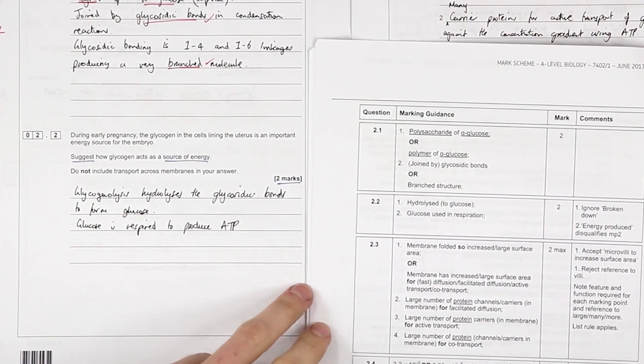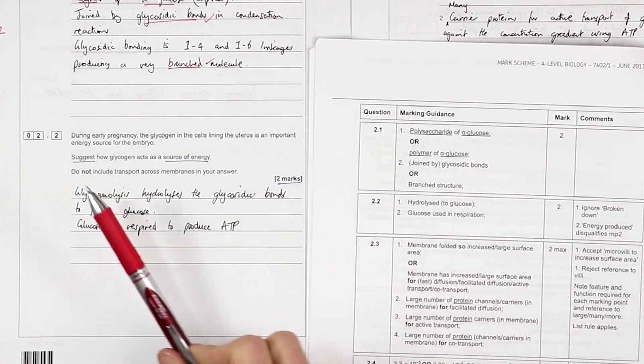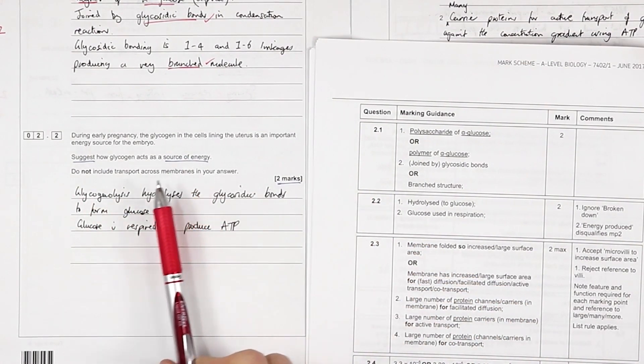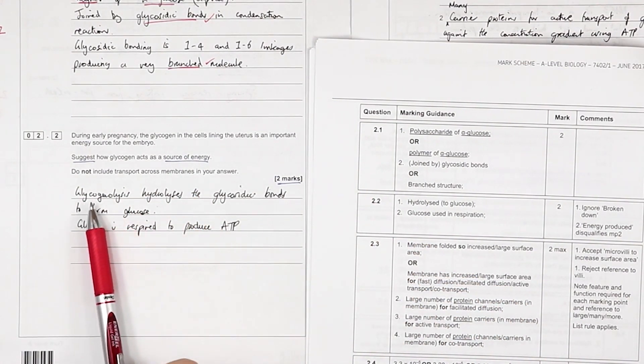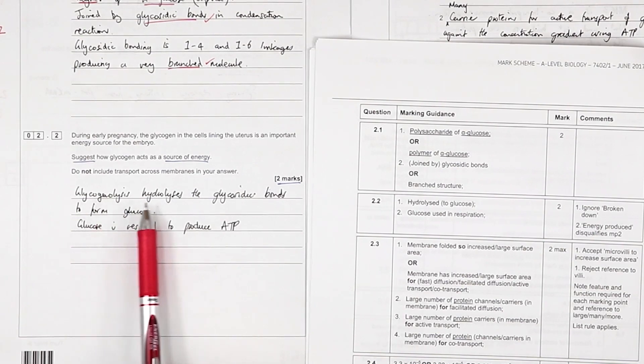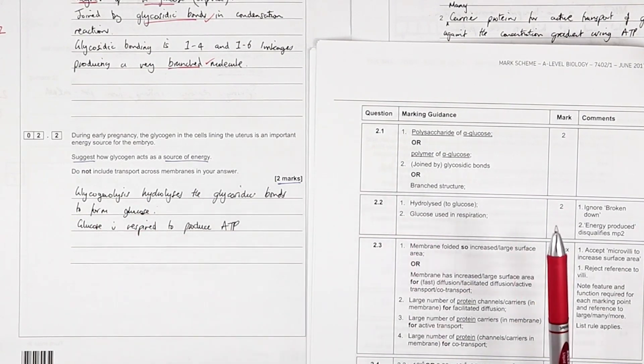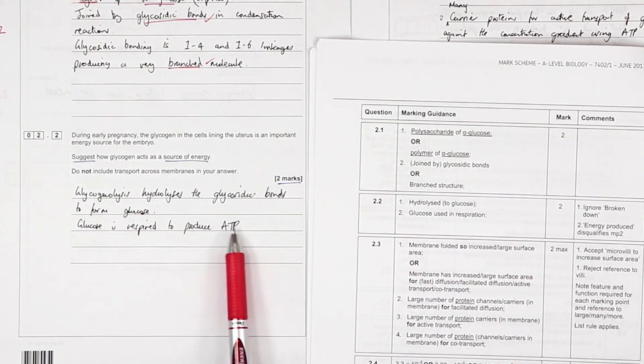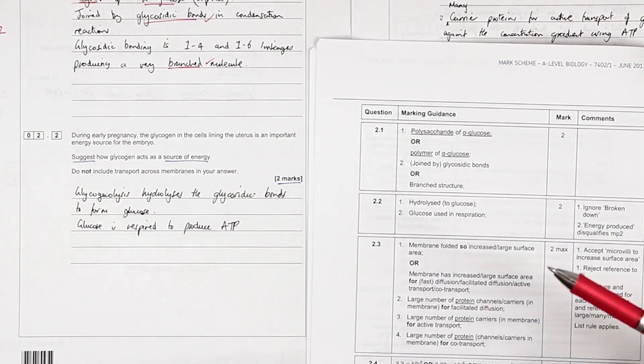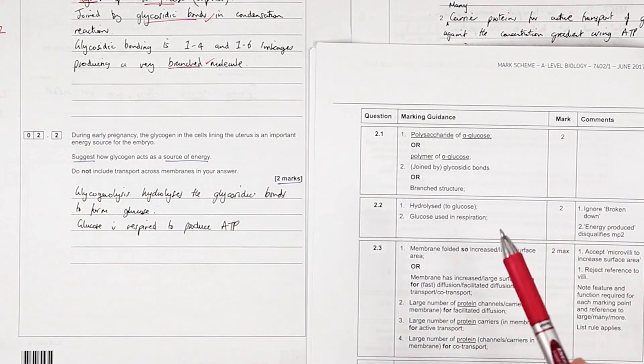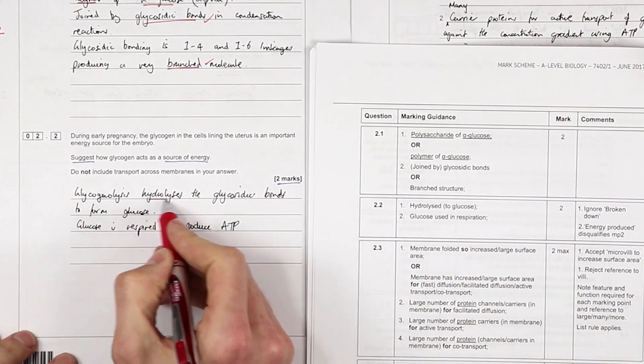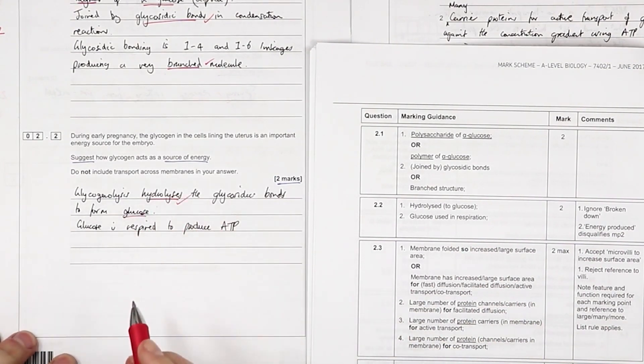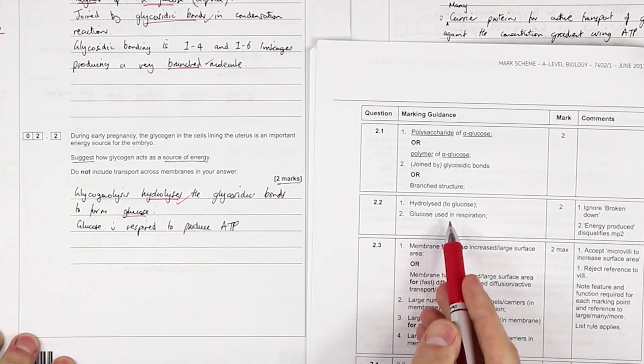Suggest how glycogen is a source of energy: glycogenolysis, the breaking down or hydrolysis of glycosidic bonds to form glucose. Glucose is respired to produce ATP.